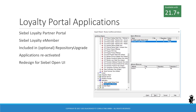While not documented in the bookshelf for 21.7, nor the release notes, the repository upgrade utility imports repository artifacts to reactivate the Siebel Loyalty Partner and Member Portal applications. These applications have been updated for full OpenUI support, having been inactive since OpenUI was introduced in 2012.